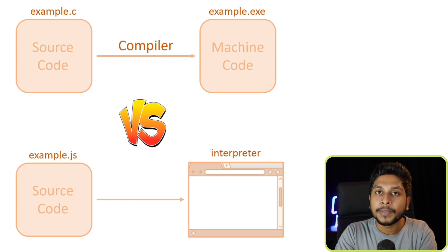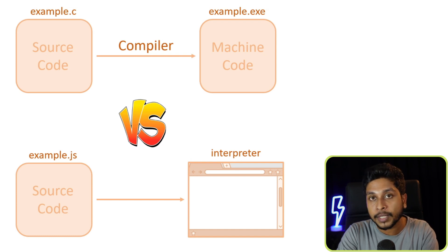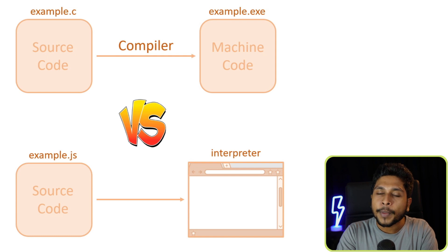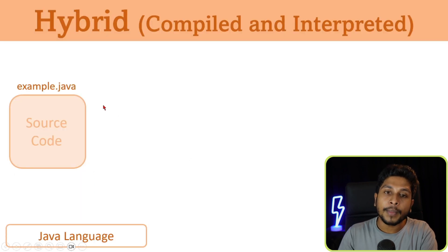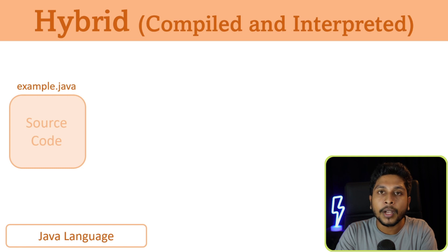Let's talk about the compiler. If you have a compiler, you can convert the source code. For the interpreter language, you can convert the source code line by line. There are other programming languages that use both compiler and interpreter — we can use Java, we can use Python — these are hybrid programming languages.